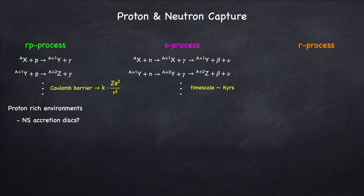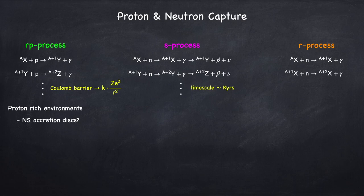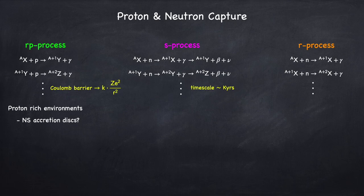Now we have the R process — this is basically the same thing as the RP process, except we're rapidly piling on neutrons instead of protons. We start off with a seed nucleus, it captures a neutron making an isotope, but because this is rapid neutron capture, it's not going to have time to beta decay. It just captures another neutron making an even heavier isotope, and before this one has time to beta decay, it captures another neutron. You keep going, piling on one neutron after another. Eventually you'll get to an extremely unstable nucleus where it will beta decay faster than capturing a neutron. The timescale for moving up this chain to make heavier nuclei for the R process is of order seconds.